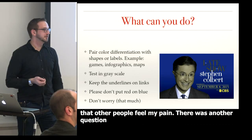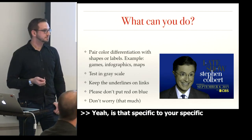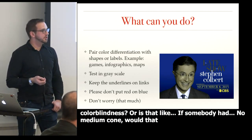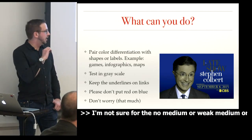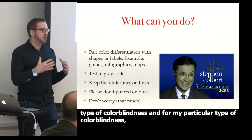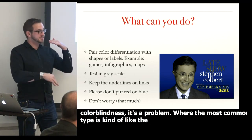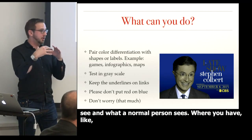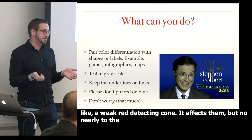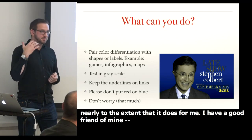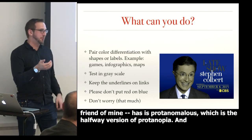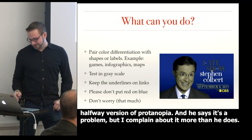A question: is the red-on-blue problem specific to my type of color blindness, or would it affect someone missing the medium cone? I'm not sure for the no-medium or no-short conditions, but for both the most common type and my particular type, it's a problem. The most common type is like a halfway point between what I see and normal vision — a weakened red-detecting cone. It affects them, but not nearly as much as it does for me. A friend of mine who is protanomalous — the weakened version of protanopia — says it's a problem, but he complains about it way less than I do.